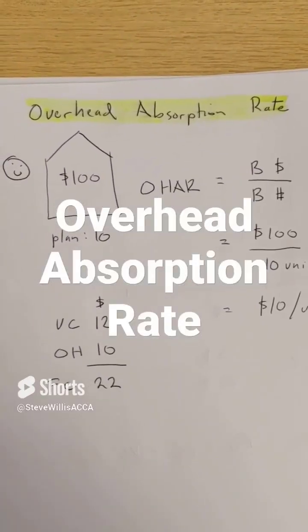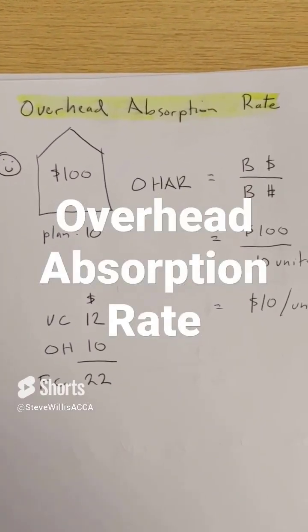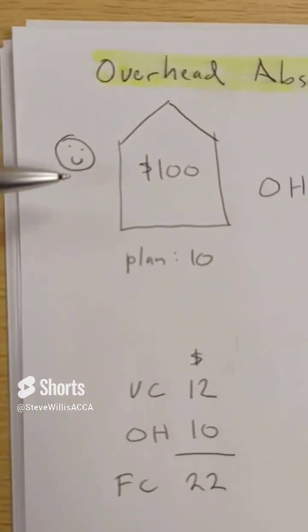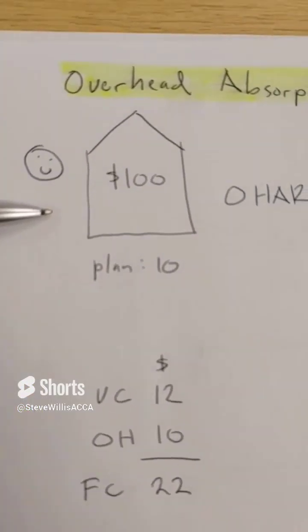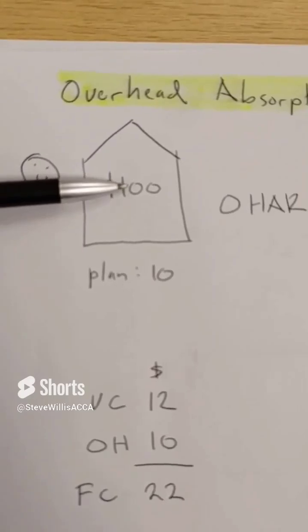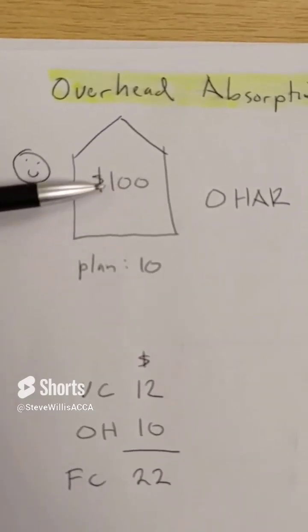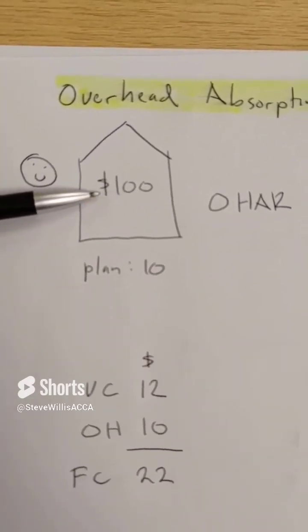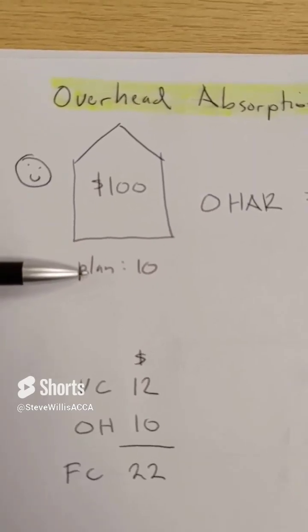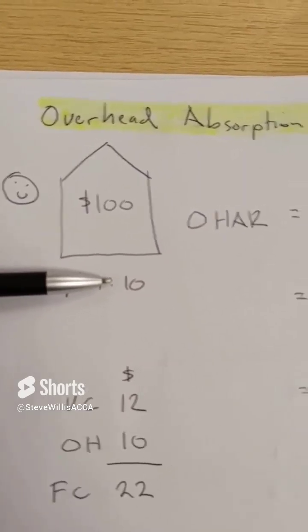Let's look at the concept of the overhead absorption rate. I have a business producing and selling bicycles. My fixed production overheads - my rent, my salary for the manager - total $100. My production plan for next month is to produce 10 bicycles.